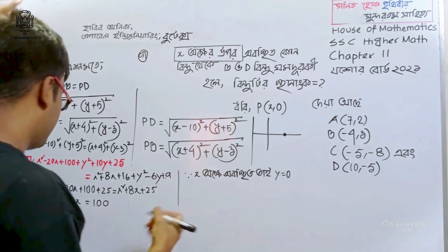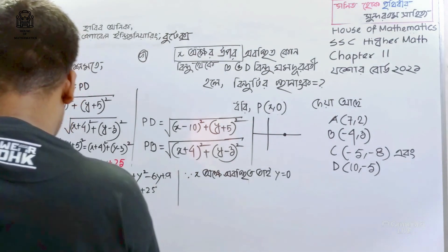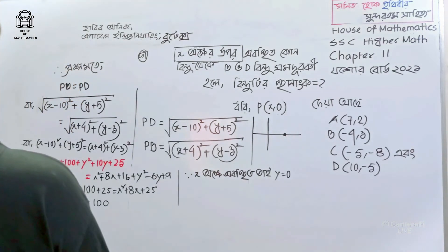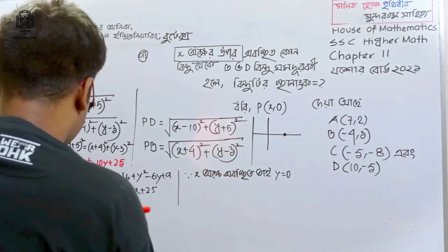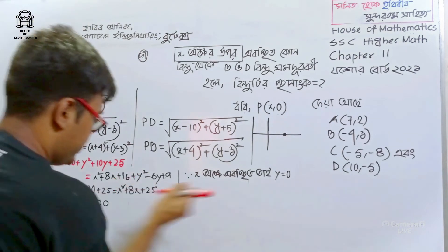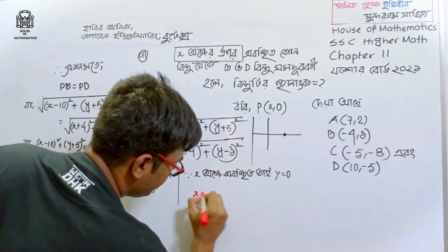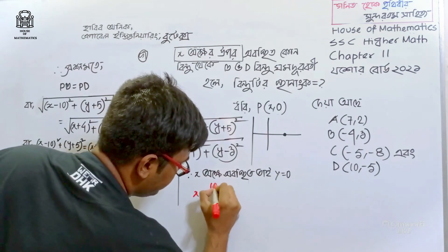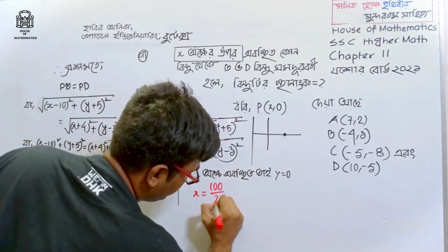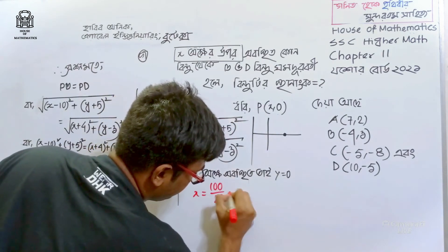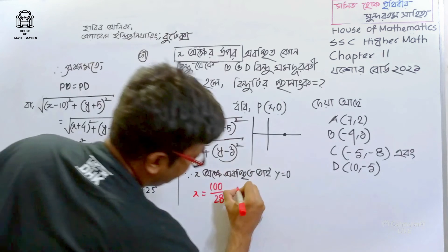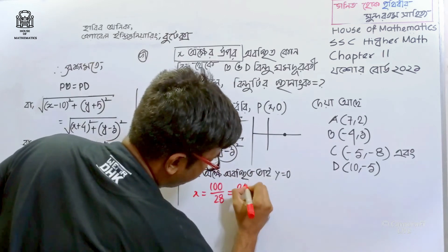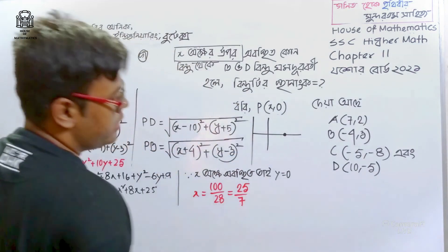So x is equal to? It is very simple. 28x equals 100, so x equals 100 divided by 28, which simplifies to 25 divided by 7.